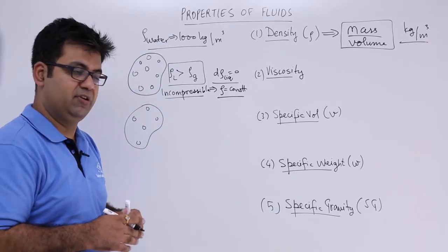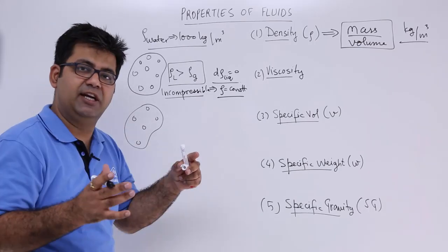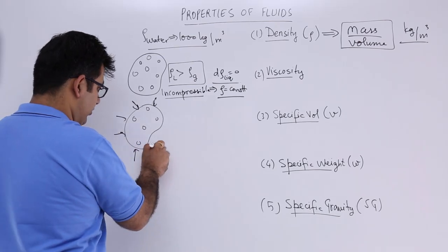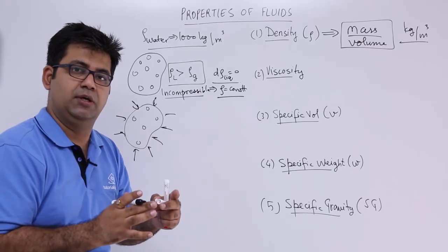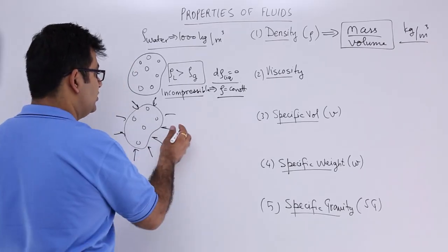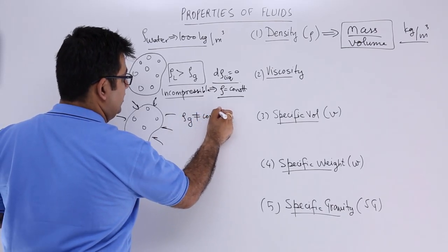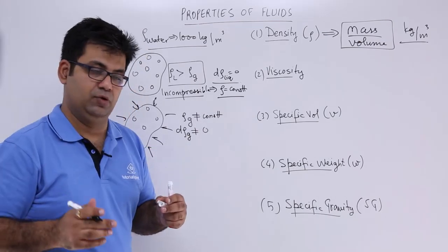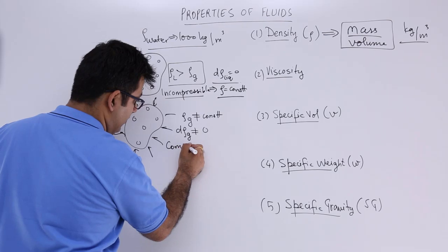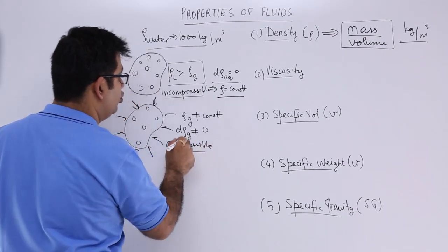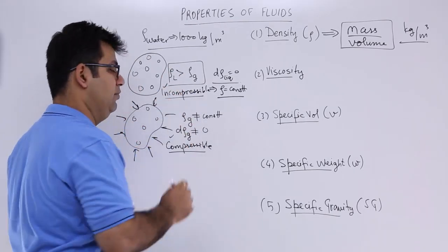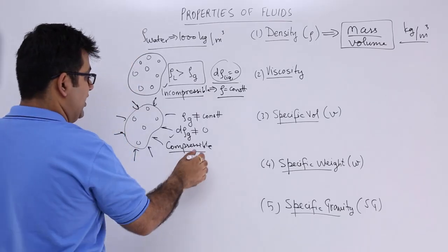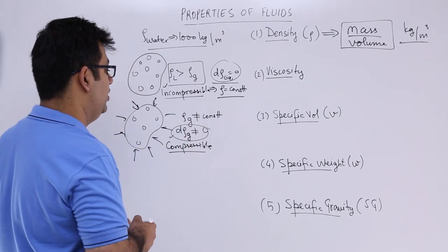If you talk about a gas, you can change the density of 1 meter cube of volume. When you put pressure from all sides and compress it, you bring these molecules closer to each other, so the density will increase. The density of a gas is not constant — the differential of the density of a gas is not equal to 0. This means that gases are compressible. So this gives us two kinds of fluids: incompressible fluids, for which d-rho equals 0, and compressible fluids, for which d-rho is not equal to 0.